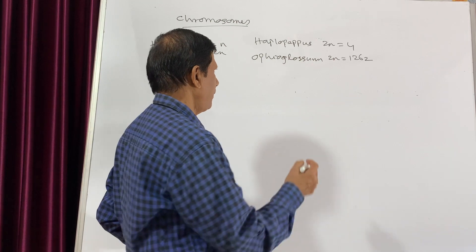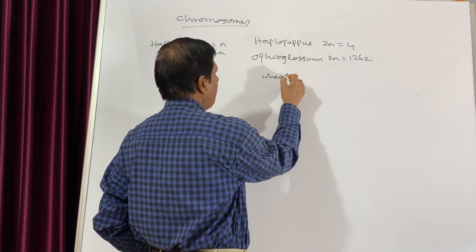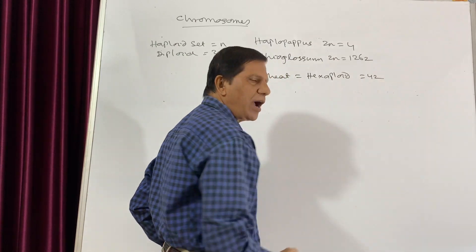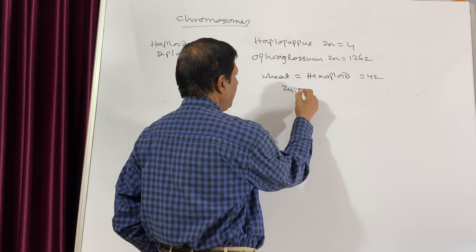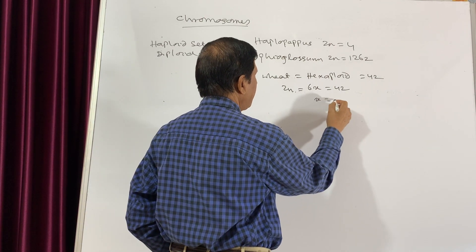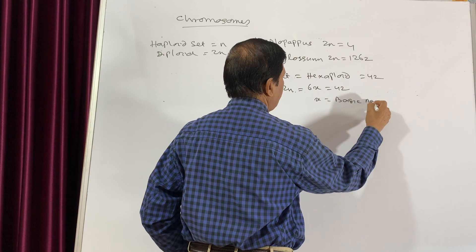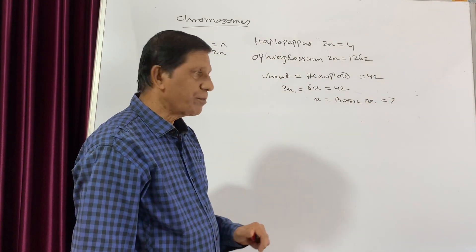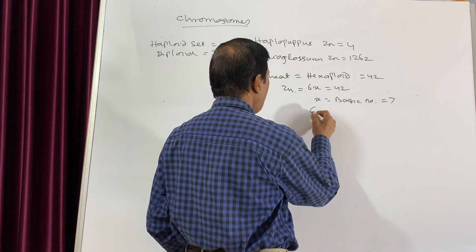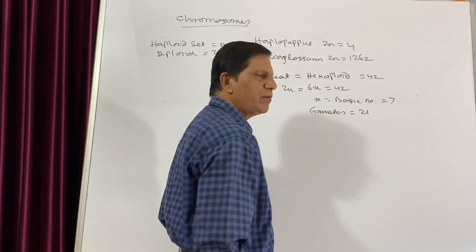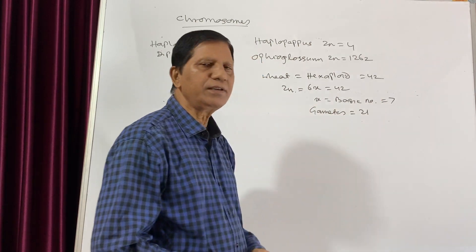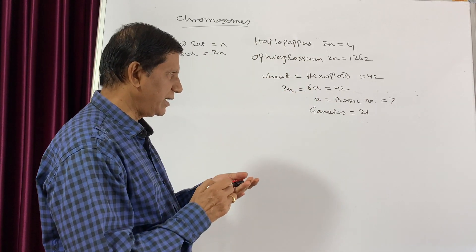Let us discuss another example. We know that the wheat plant is a hexaploid and the chromosome number is 42. So we can write 2N is equal to 6X is equal to 42, where X is the basic number equal to 7 because it is hexaploid. When wheat gives rise to gametes, the gametes will contain 21 chromosomes, so that when male and female gametes fuse it will be 42. But the basic number is 7, that is why it is known as hexaploid.